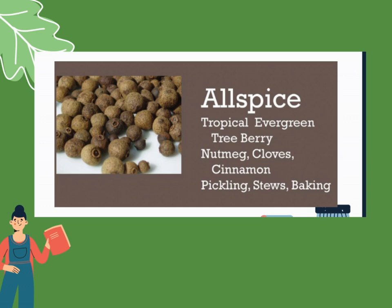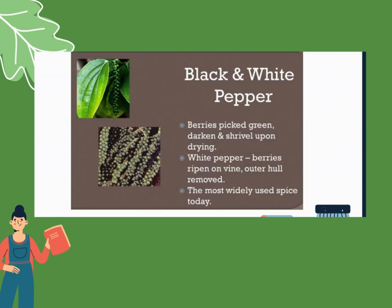Next is black and white pepper, or paminta — pamintang puti or pamintang itim. Black pepper berries are pickled green, then darkened and shriveled upon drying. White pepper berries are ripened on the vine and the outer hull is removed. Pepper is the most widely used spice today — commonly ginagamit natin as a spice, either white or black.